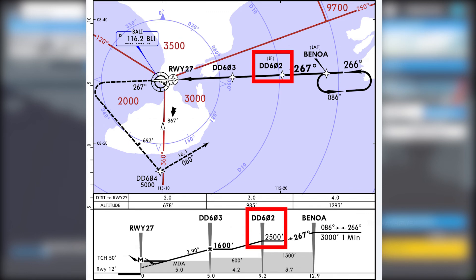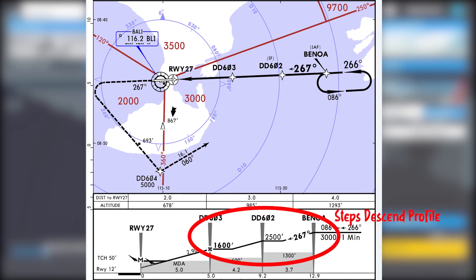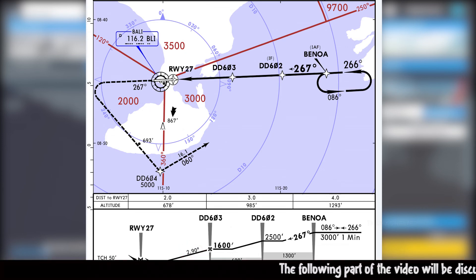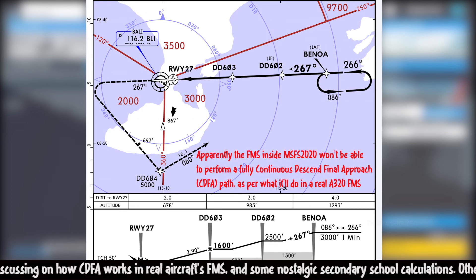Looking at the profile, we expect to come in via position Benoa, which is the initial approach fix, then proceed to Delta Delta 602 as the intermediate fix, and finally pass Delta Delta 603, the final approach fix. On the plan view it is quite a step descent approach. You are required to cross Benoa at 3000 feet, then descend to 2005 crossing 602, then descend to 1600 feet before arming the approach.